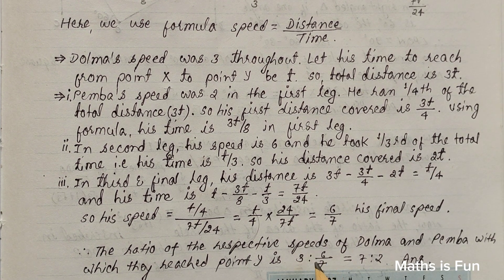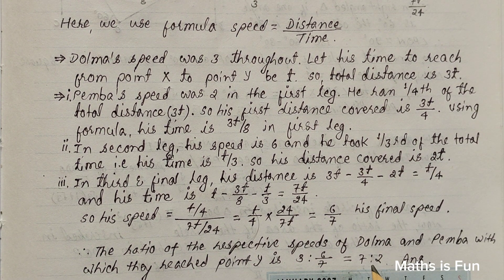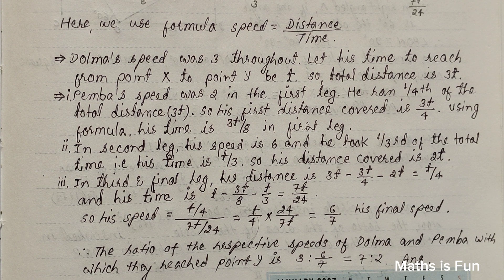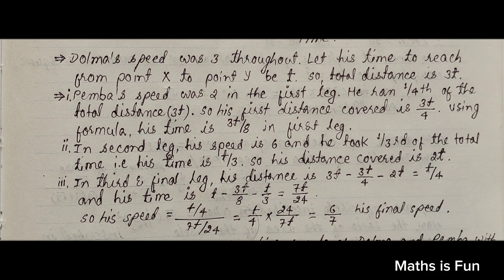So 3 ratio 6 over 7 comes out to be 7 ratio 2 if we simplify it. So the final answer is 7 over 2.